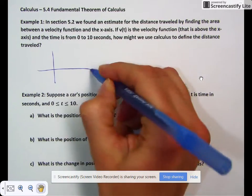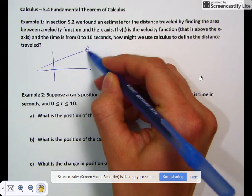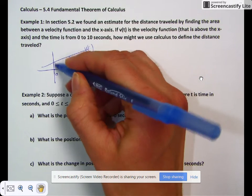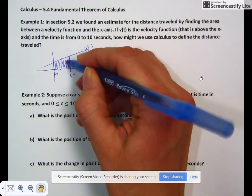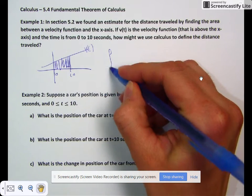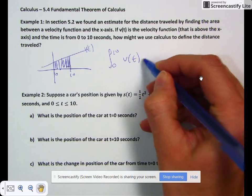If you remember from 5.2, we would have a velocity function v(t), and if we want to go from 0 to 10 seconds, we would find the area of that shaded region. We found that we could find that area by taking the integral from 0 to 10 of v(t) dt.